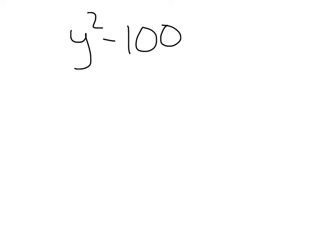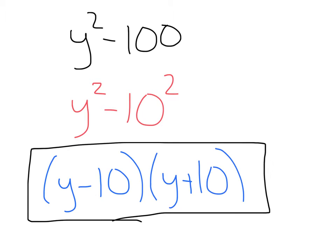Let's try y squared minus 100. That's going to be the same as y squared minus 10 squared. And our factored answer is y minus 10 times y plus 10.